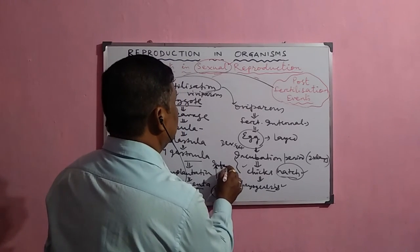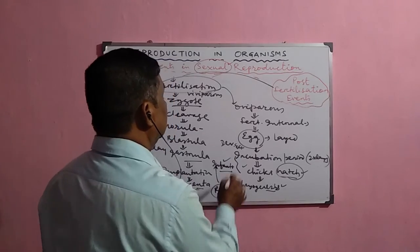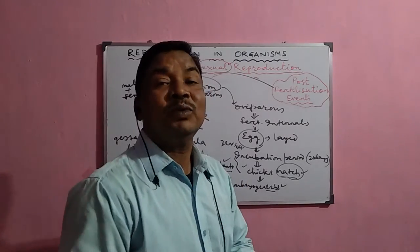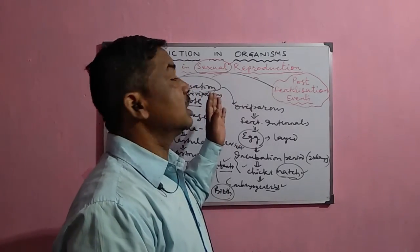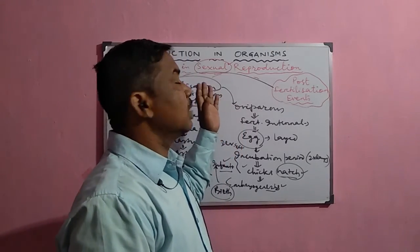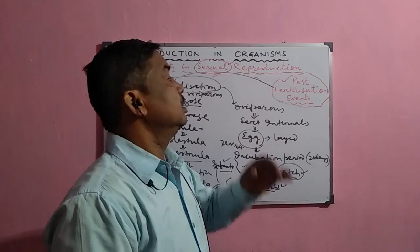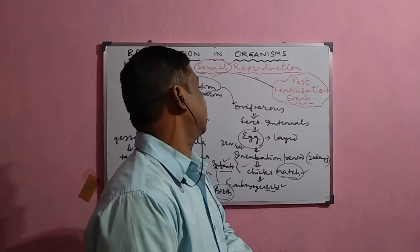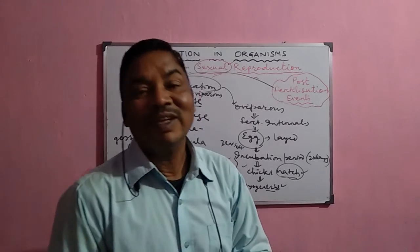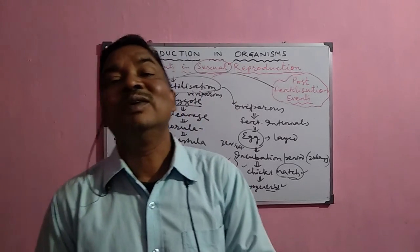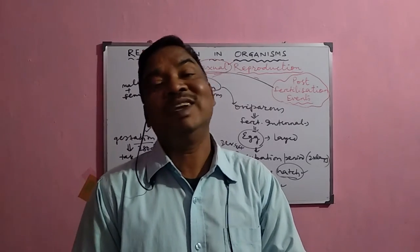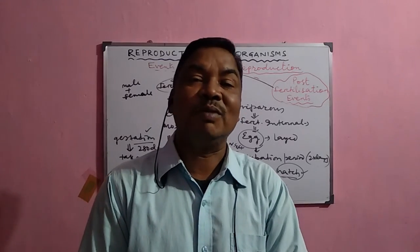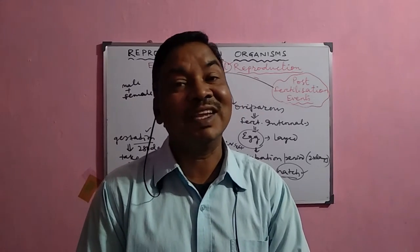This completes the discussion of the different events which occur in sexual reproduction. Sexual reproduction in flowering plants and in human beings will be studied in detail separately in the next chapter. I hope this video is beneficial for you — please like it and subscribe for further videos. Thank you very much.